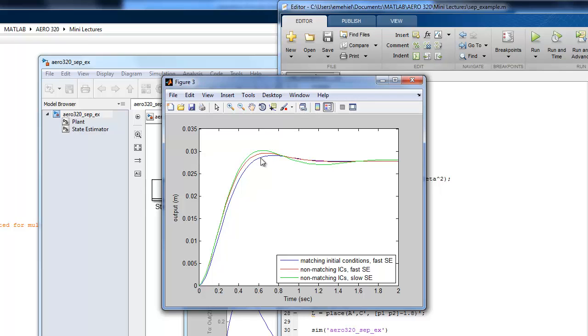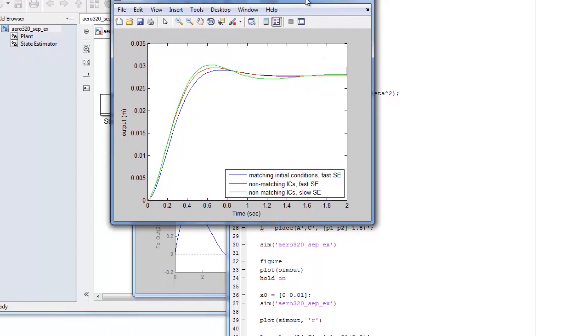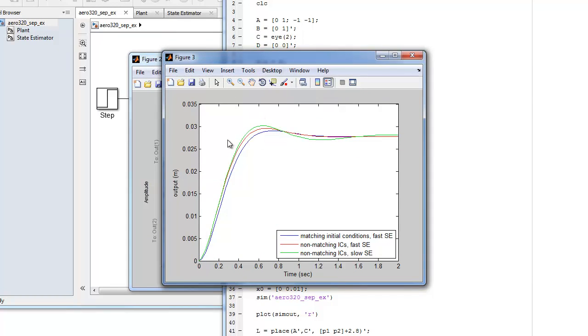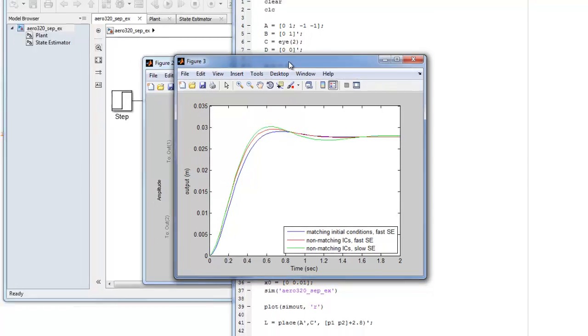And of course, if we wanted to get the gain properly, in other words, we wanted the full state feedback with state estimator to converge to the value of the input, one, then we would need to add our gain on top of U so that we can get this to go to one instead of 0.25. So this is the loop gain recovery idea. That's how you do a state estimator with full state feedback design using the separation principle.